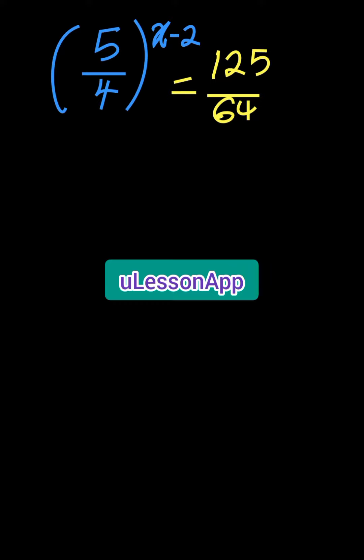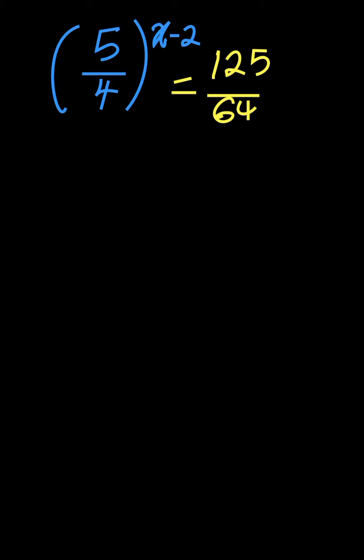We have 5 over 4 all to the power of x minus 2 is equal to 125 all over 64.